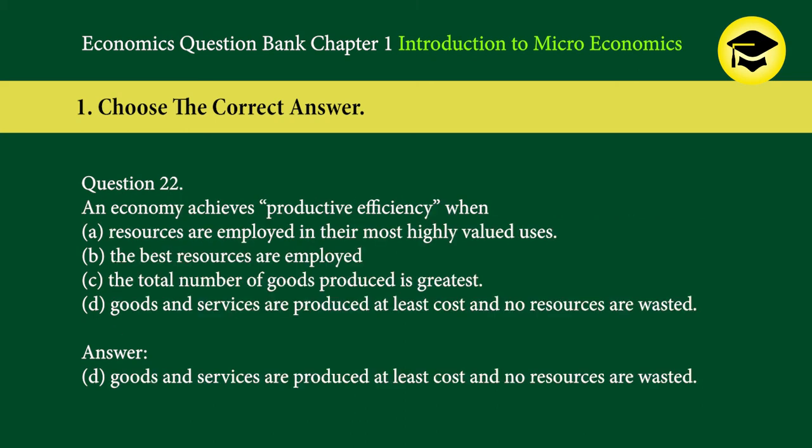Question 22: An economy achieves productive efficiency when — A. resources are employed in their most highly valued uses, B. the best resources are employed, C. the total number of goods produced is greatest, D. goods and services are produced at least cost and no resources are wasted. Answer: D. Goods and services are produced at least cost and no resources are wasted.